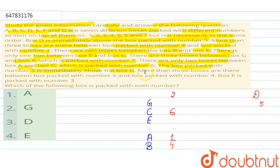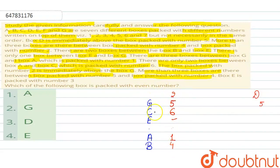Now in the next condition, it says that more than three boxes are between the box packed with number 5 and the box packed with number 4. Since we need more than 3, that means we should place number 5 in position 5. And since box D is immediately above box 5, we have placed box D there, placing the remaining box F in that position as well.